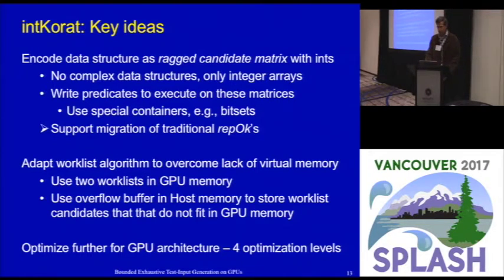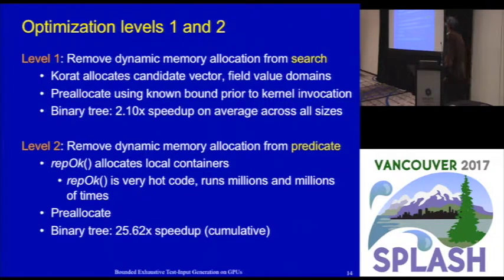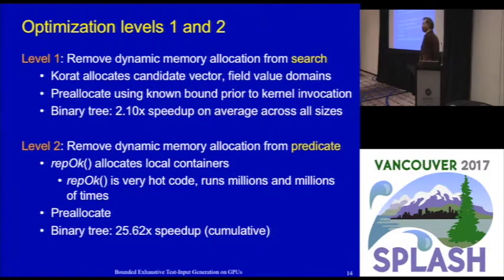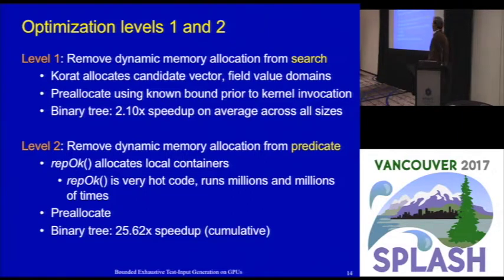We define four optimizations to further speed up the search. The level one optimization removes all dynamic memory allocation from the search. Since the finalization bound is known before the search starts, we pre-allocate integer arrays of appropriate sizes. Applying this optimization alone gives a 2.1x speedup on average across all sizes for binary tree.